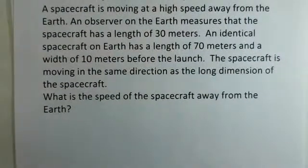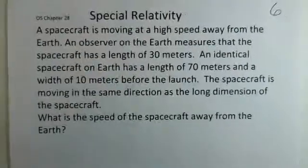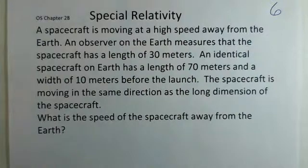Professor Clements here again. We consider a special relativity situation and are trying to determine the speed of an object moving away from the earth. We've got a spacecraft, and we have a measurement by an observer on the earth measuring the spacecraft to be 30 meters long.